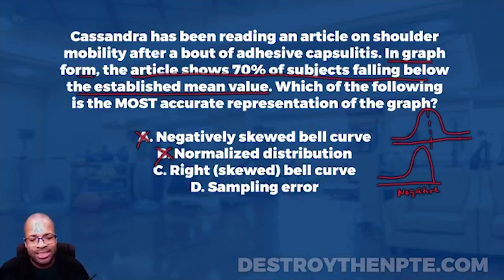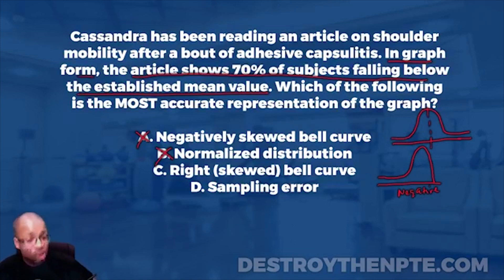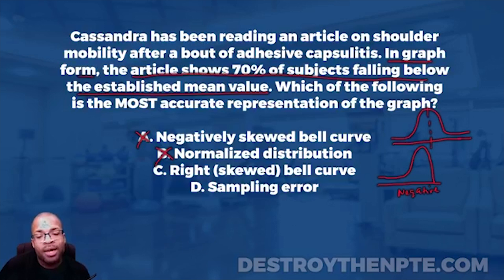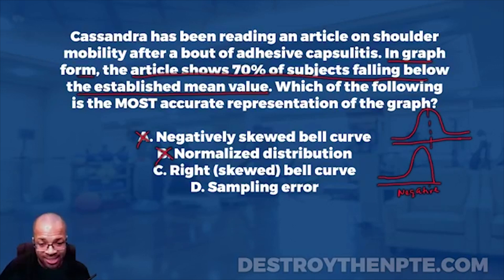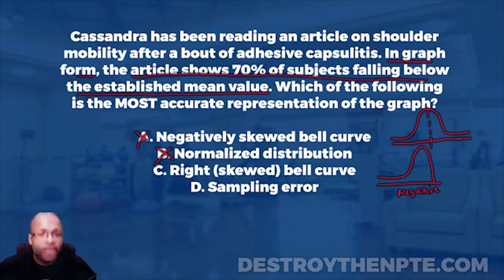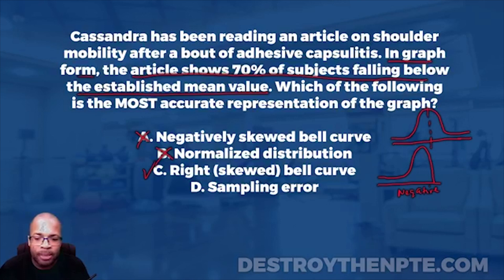Answer C says right skewed bell curve, also known as a positive skewed bell curve. This is where the majority of the population that was studied falls below the mean. The question says 70% of the subjects — the majority — fall below the established mean. Bingo! That's exactly what we're looking for. By definition, that makes a lot of sense.